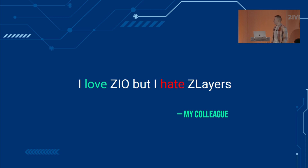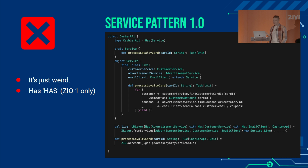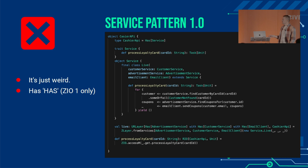Still, I had a call with one of my colleagues who told me he loves ZIO but hates ZLayers. I was wondering why, and then I took a look at the codebase and saw the service pattern 1.0. This pattern has 'Has', 'Has', 'Has' everywhere — thankfully it's only in ZIO 1. This pattern tries to hide 'Has' as an implementation detail, but it's not really an implementation detail because you need to know when you're working with 'Has' vs. when you're working with the services. And there's this 'processLoyaltyCard' accessor method, which brings me to the next point.